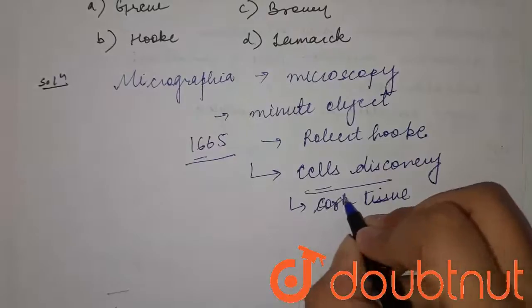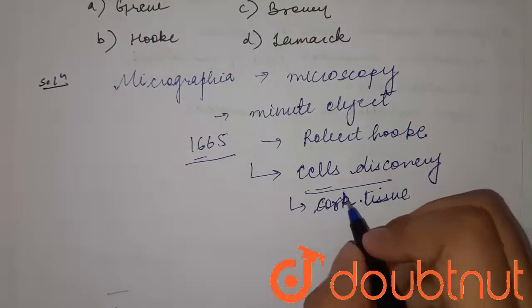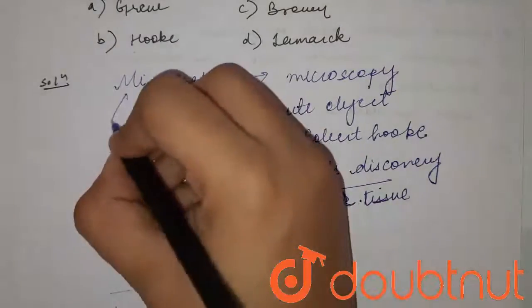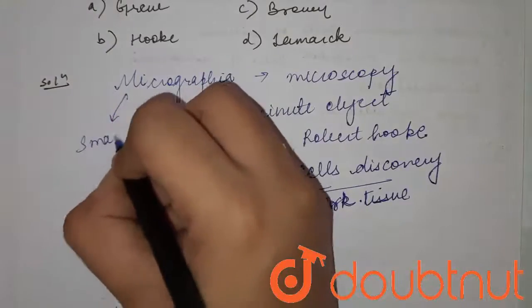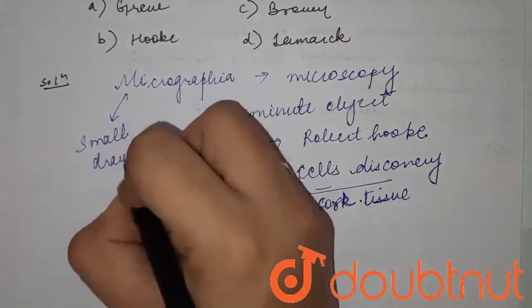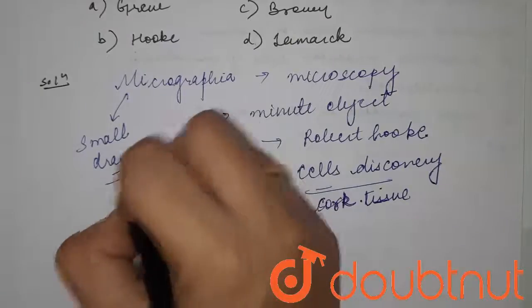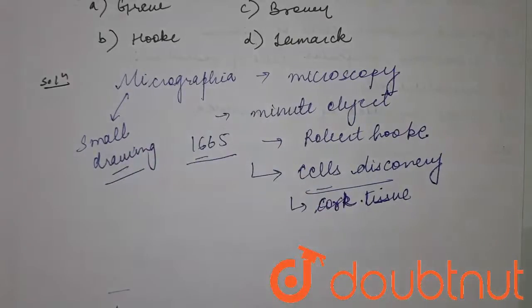So the book Micrographia is a very important publication which is also known as the Small Drawings. In this, there was the study of structures of snowflakes and the first use of the word 'cells' for the honeycomb-like structure in cork.